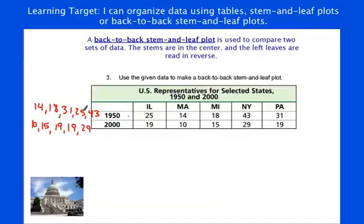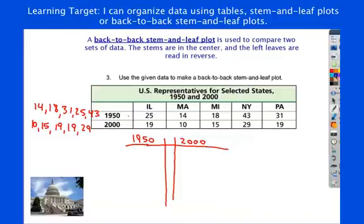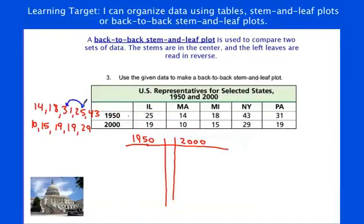Back-to-back stem-and-leaf plot is kind of like it sounds. We're going to do one stem-and-leaf plot on this side, and let's just say that's for the 2000s. Our stems are going to go here, and then we're going to do one on the left side, too, for 1950. Our stems go down the center, and the stems are for this side and this side. For 1950, the stems I need, looks like I just need one, three, oh, I didn't write this in order. Switch those. One, two, three, and four for 1950. For 2000, looks like I just need one and a two.